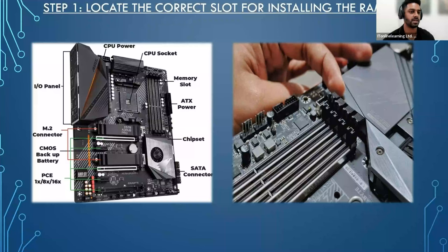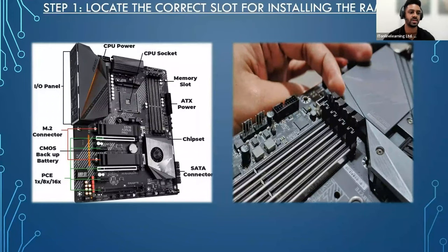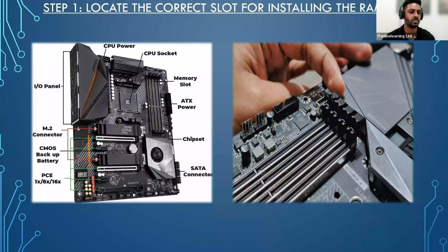Always consult the manual that came with your board. A single RAM stick will almost always go into the first slot. Make sure you check the motherboard manual to see if it mentions which socket to place your RAM stick in. If your manual does not mention anything, just install a single RAM module in the slot that's closest to the CPU.